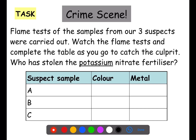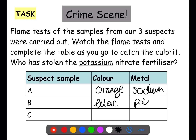Let's have a look at our suspect samples. The first bottle, A, was burning with an orange flame — this means that we have sodium metal. B burnt with a lilac flame, which is potassium metal. And C burnt with a red flame, showing that there was lithium present. This means that our suspect who has stolen the fertilizer is B.